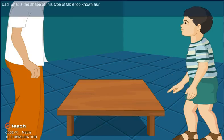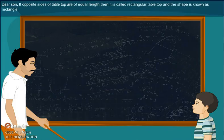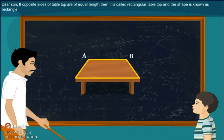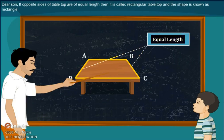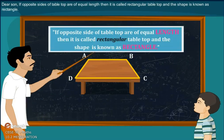Dad, what is the shape of this type of tabletop known as? Dear son, if opposite sides of a tabletop are of equal length, then it is called rectangular tabletop and the shape is known as rectangle.